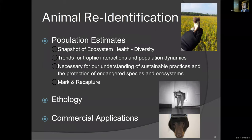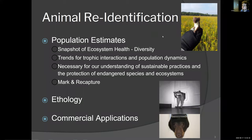Animal re-ID — that's what this is all about. Animal re-ID has a whole slew of use cases, of which we'll talk about a few. One of them is population estimates. Population estimates essentially provide a snapshot of ecosystem health. We consider a metric known as diversity, which is essentially the proportion of the different abundances of the species within an ecosystem. This gives us insight into the trends of trophic interactions and overall population dynamics.